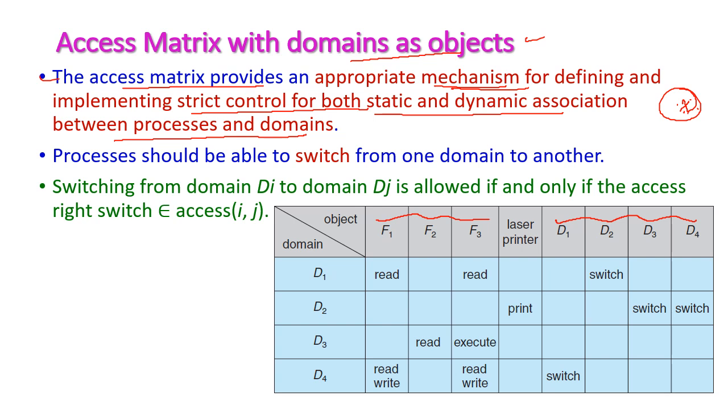The process should be able to switch from one domain to another, which should be defined in the access matrix itself. Switching from domain i to domain j is allowed if and only if the access right switch belongs to access(i,j).